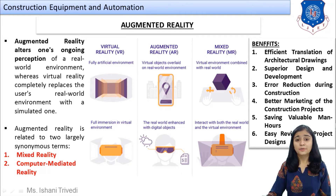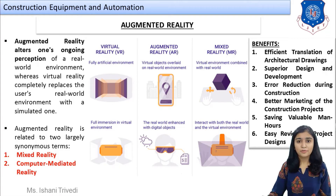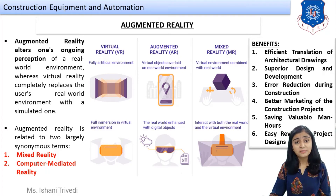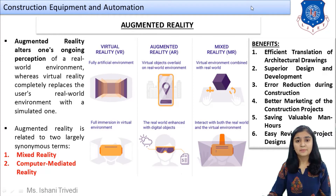Next: error reduction during construction. Once you have the full process in front of you — how it is going to be carried out and calculated — errors will be eliminated from the start, achieving error reduction at a major level. Next: better marketing of construction projects, which we have discussed a number of times. Next: saving valuable man-hours — instead of making trial and error designs and rework, the time consumed will be less and the final design will be achieved quickly. Finally: easy review of project designs — inspections and reviews can be carried out before commencing the work, and even after commencing, reviews can be done with the help of augmented reality.